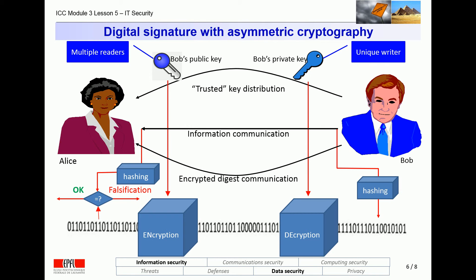This slide again shows the same thing in the typical Alice and Bob scenario, where Bob signs his information — for instance an email or a web post — with his private key. That way, Alice, or in fact anyone else with access to the information, can readily use Bob's public key to verify that the information was not altered and genuinely came from Bob.